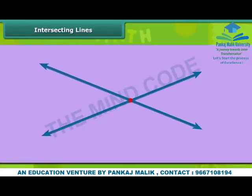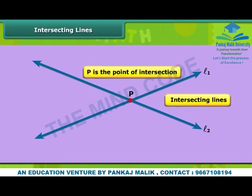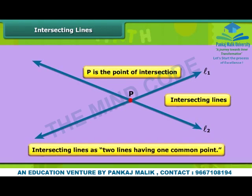Look at the figure. When two lines pass through a single point, we call them intersecting lines. Two lines L1 and L2 pass through a point P, then L1 and L2 are intersecting lines and P is the point of intersection. We can also define intersecting lines as two lines having one common point. A variety of examples around us has intersecting lines.